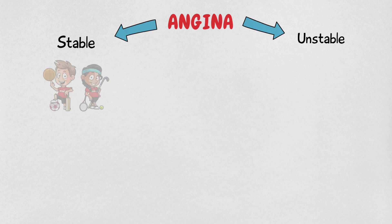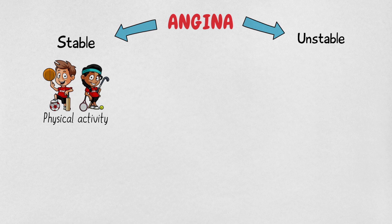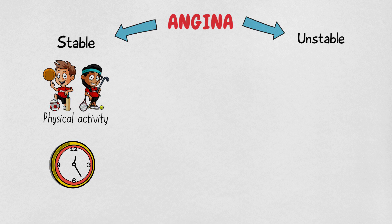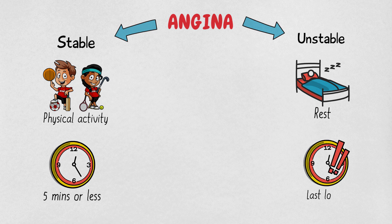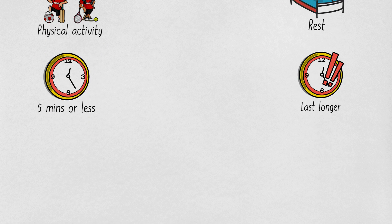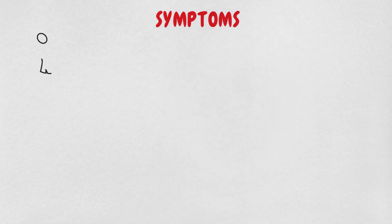Stable angina is the most common type and develops during physical activity. It usually lasts a short time — approximately five minutes or less — after the physical activity has ended. Unstable angina is less common and usually occurs during periods of rest. It usually lasts longer and symptoms may be more severe.